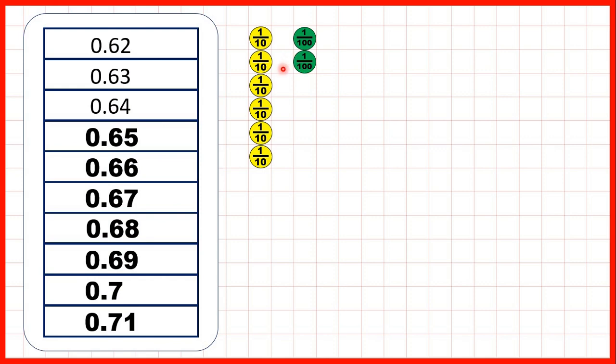And let's show the counting using place value counters. So 0.62 means we have six tenths and two hundredths. We can carry on adding hundredths. But now we have ten hundredths and we exchange ten hundredths for one tenth. So now we have seven tenths. That's why we write 0.7 and then we just count on one more hundredth.